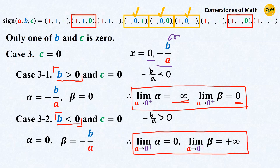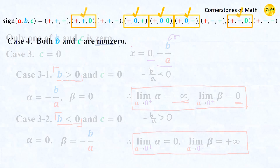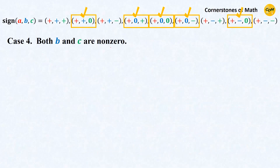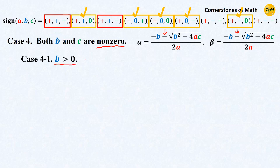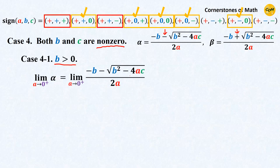So far we have covered the cases where at least one coefficient is 0. Now let's move on to the cases where all three coefficients are non-zero. Alpha has the minus sign and beta has the plus sign. For the case where b is positive, the limit of the smaller root alpha: notice that since the 4ac part goes to 0, the entire numerator approaches minus 2b, but the denominator approaches 0, so we have a negative real number divided by 0, meaning alpha approaches negative infinity.